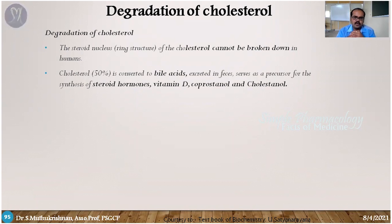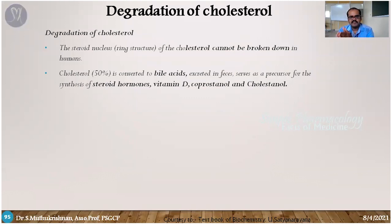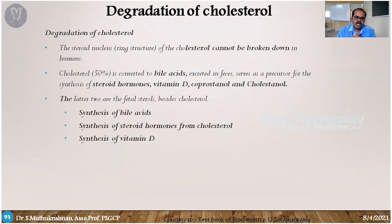Bile is secreted and is useful for the absorption of lipids. In enterohepatic circulation, bile is reabsorbed in the portal system and returned to the liver. Cholesterol is converted into three major products: bile acids, steroid hormones, or vitamin D3.